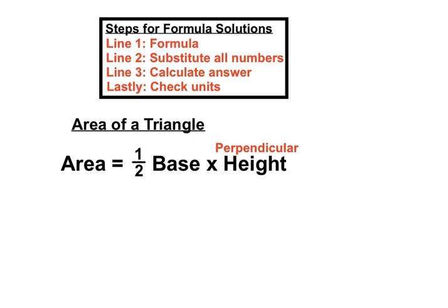And there we discovered the area of a triangle was half the base times the height, and we made sure it was the perpendicular height. The height that's at 90 degrees to the base.